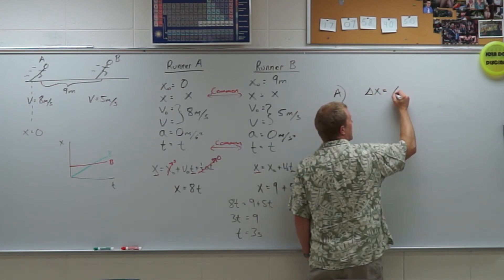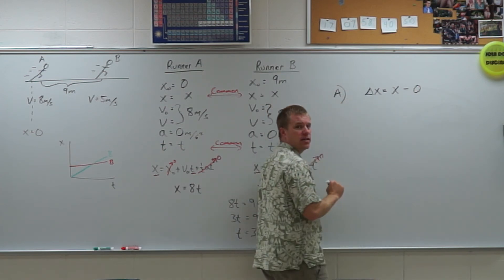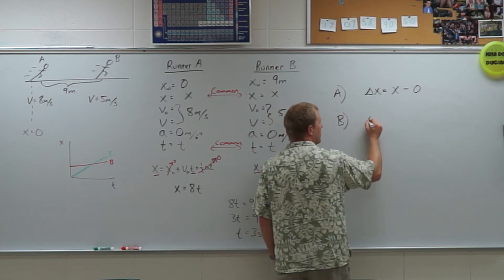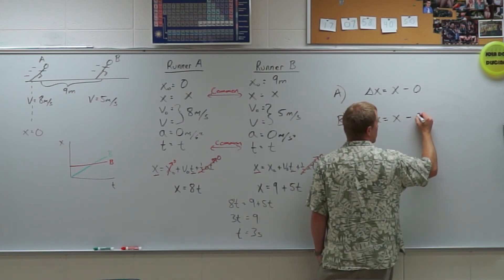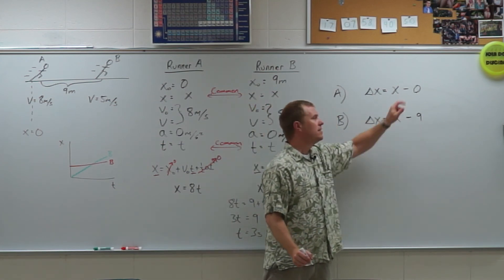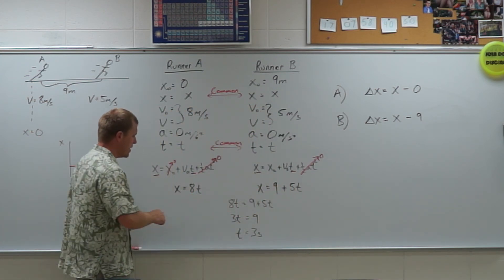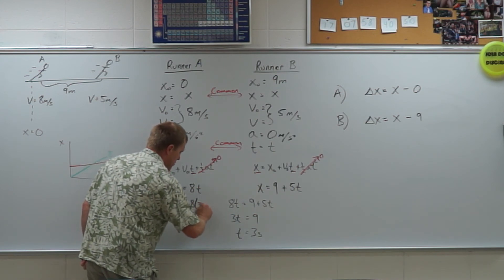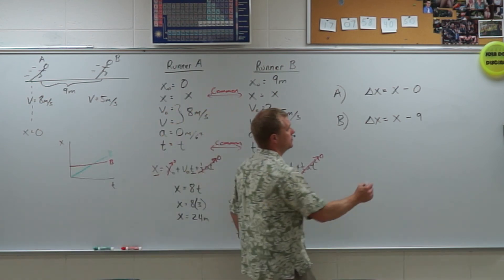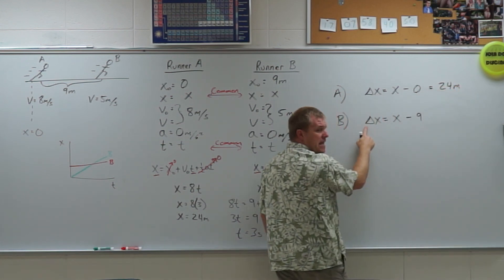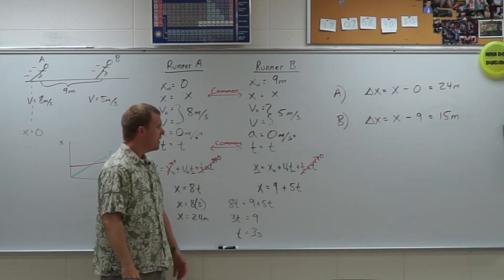So for runner A, it was pretty easy, because the final position minus the initial position, which was 0. So the distance they ran, or their displacement, is equal to their final position. For runner B, however, the displacement is going to be that final position minus their initial position, which was 9, because they ran 9 meters less than runner A. So we can figure that out. So plug in 3 seconds here, and I can find x. So x is going to be 8 times 3. So x is equal to 24 meters. So runner A ran 24 meters. Runner B ran 24 minus 9, so they ran 15 meters. And that's the simultaneous problem.